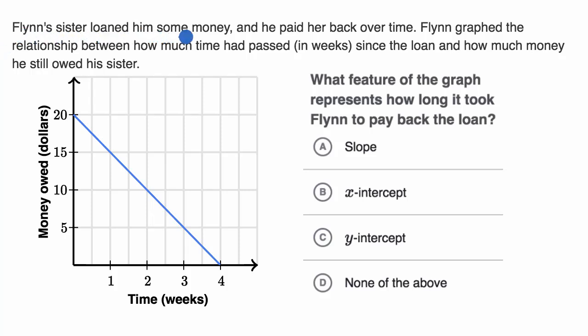Flynn's sister loaned him some money and he paid her back over time. Flynn graphed the relationship between how much time had passed in weeks since the loan and how much money he still owed his sister.